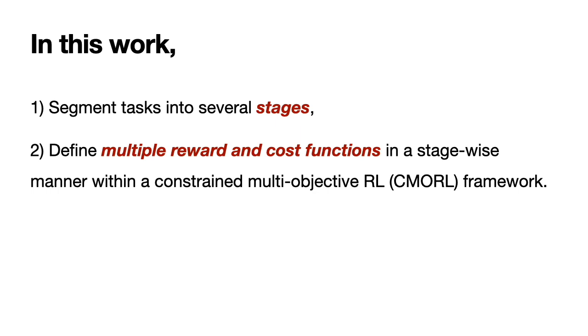To reduce the complexity of the reward shaping process, we propose segmenting tasks into multiple stages and defining separate reward and cost functions for each stage within a constrained multi-objective reinforcement learning framework. By defining rewards for each stage, we avoid the need to change reward weights dynamically. Also, defining multiple rewards instead of a single reward can simplify the tuning of the weights.